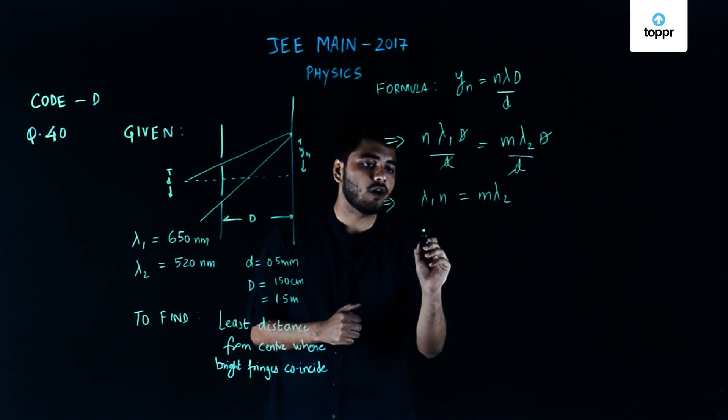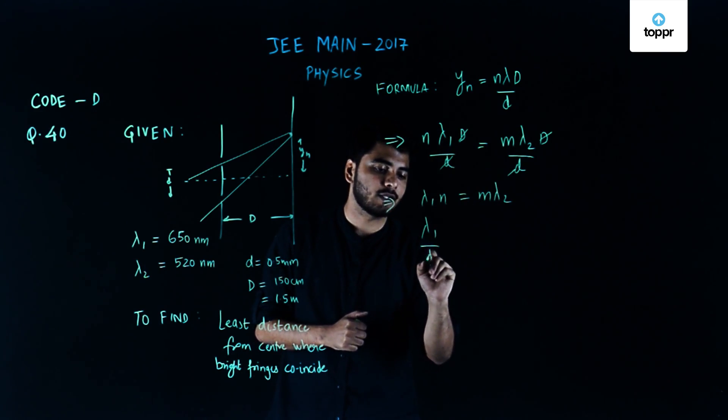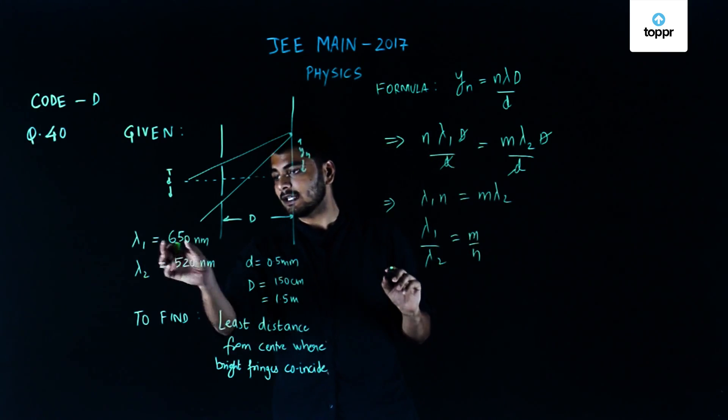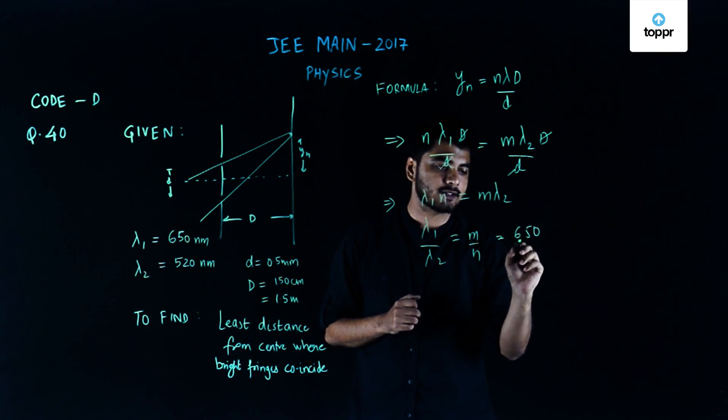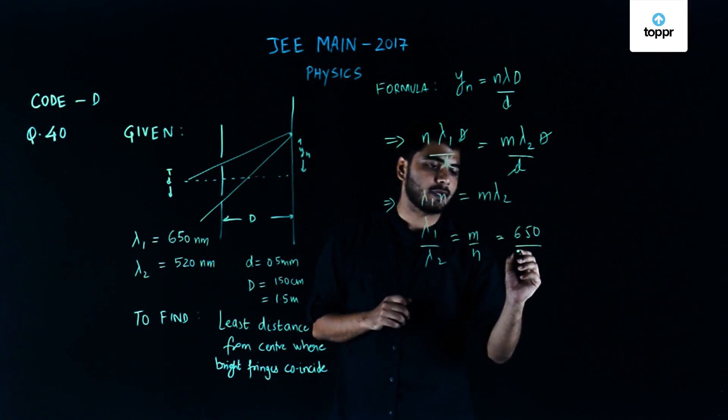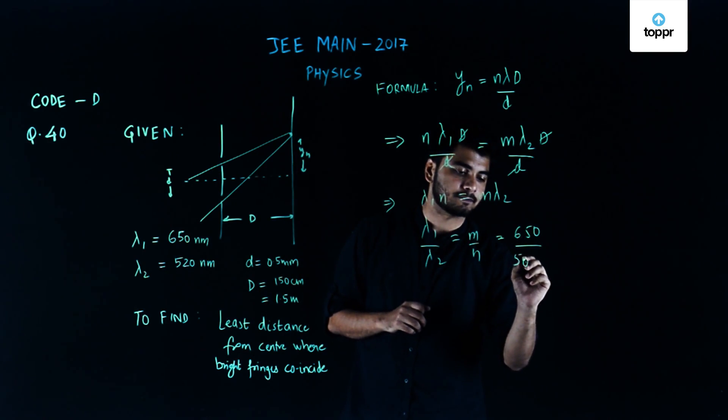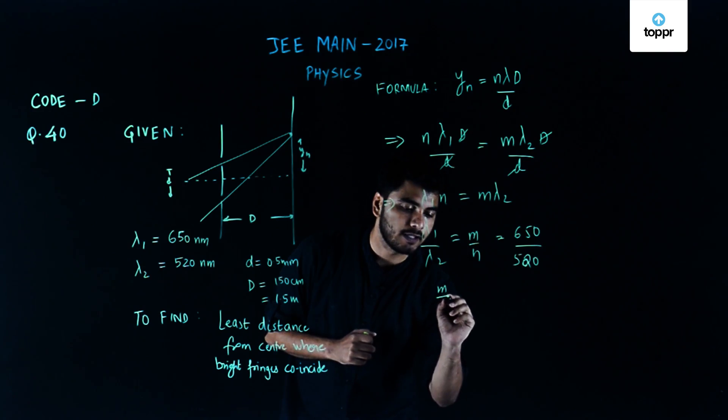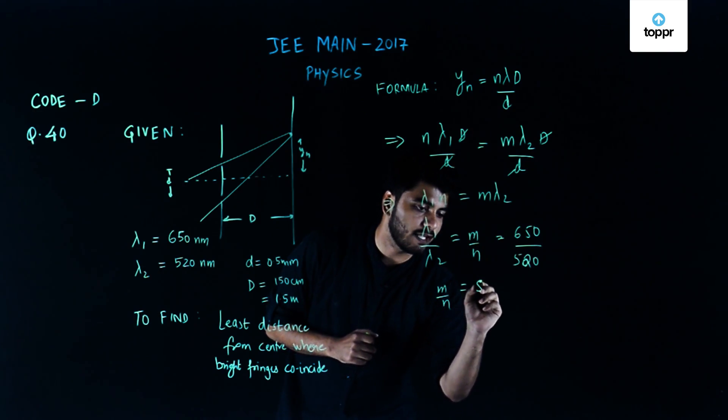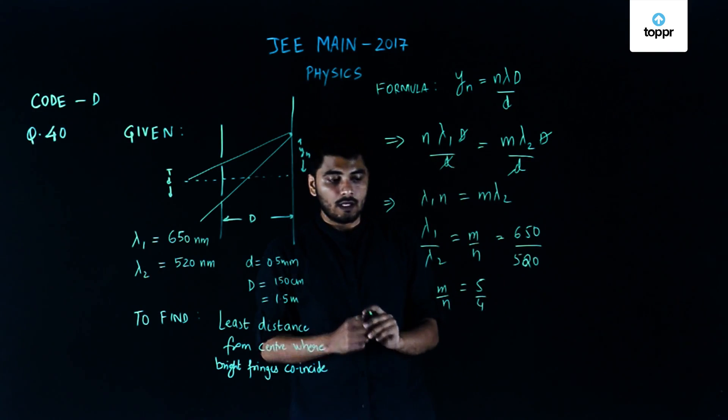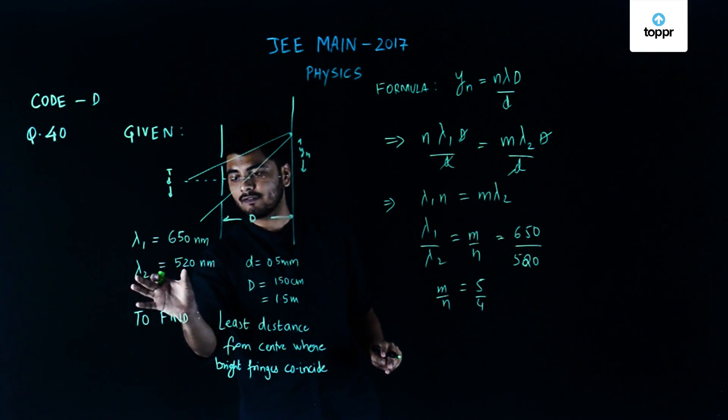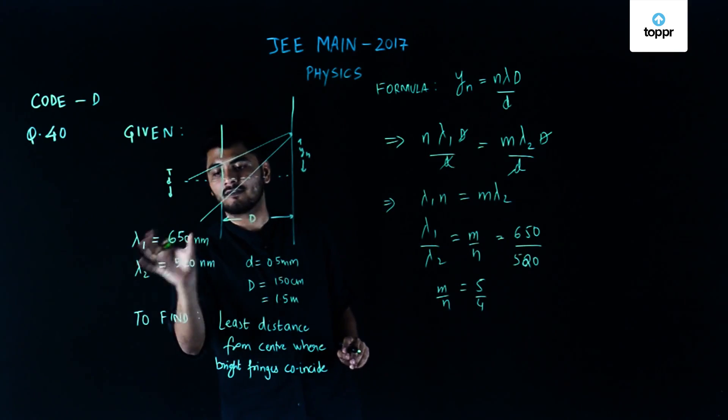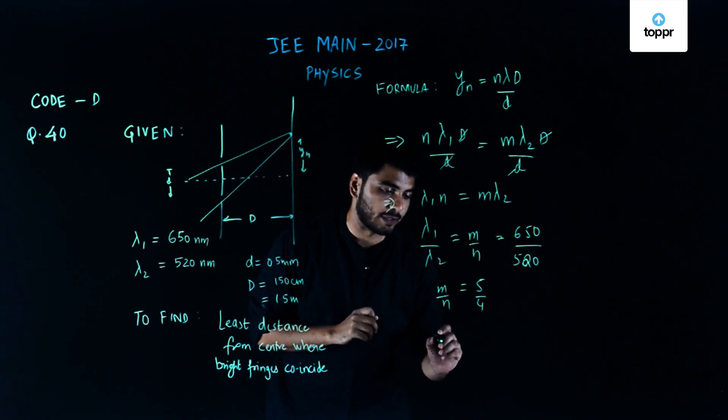The ratio of lambda 1 and lambda 2 would decide the ratio of m by n. My lambda 1 is 650 nanometers and lambda 2 is 520 nanometers. On solving this I get m to n is 5 to 4. So the fifth maxima of lambda 2, 520 nanometers, would coincide with the fourth maxima of lambda 1, 650 nanometers.